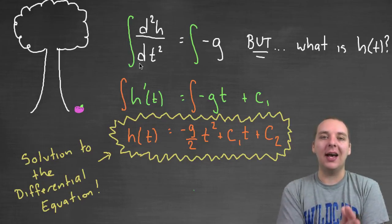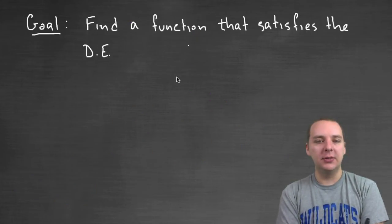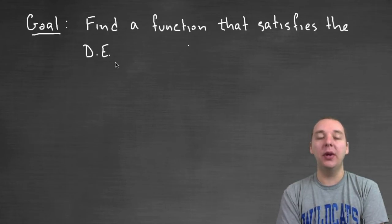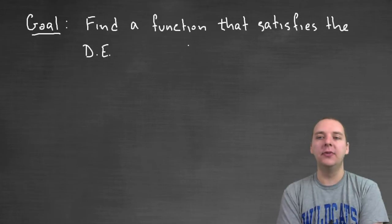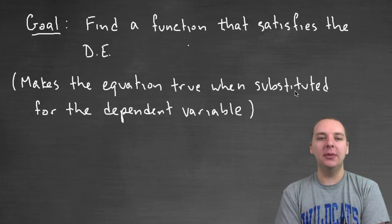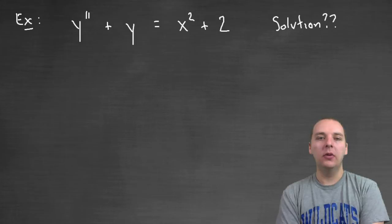We start with an equation that has derivatives, and our goal is to figure out what function makes it true. So let's make this a little more formal. Our goal is to find a function that satisfies the differential equation, the equation that has derivatives in it. In more common terms, we would say this makes the equation true when it's substituted for the dependent variable, or any of the dependent variable derivatives obviously.